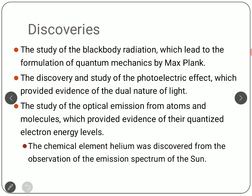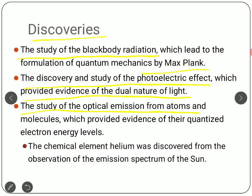There have been very important discoveries made based on optical study. One of the most initial studies was black body radiation, which laid the foundation of quantum mechanics by Max Planck — also an optical property study. The study of the photoelectric effect provided evidence of the dual nature of light. The study of optical emission from atoms and molecules provides evidence of their quantized electron levels. If you want to know what element is present in the sun, optical characterization is conducted: the spectrum tells us that helium was present in the sun, discovered from the emission spectrum of the sun.